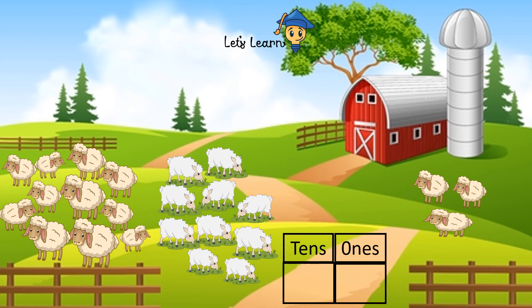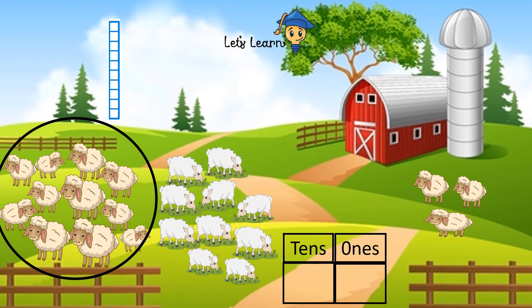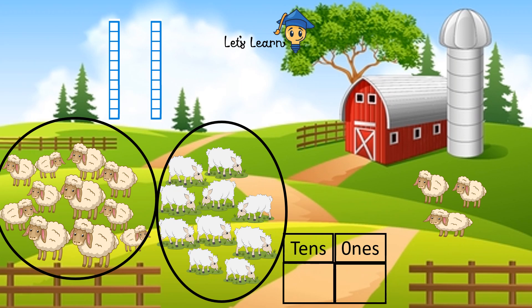Now let me show you how to represent these sheep in the form of blocks. There is one group of 10 sheep — it will be represented by one block of tens. Another group of 10 sheep will be represented by another block of tens. Then the leftover sheep will be represented by tiny little boxes — they are ones, single digit numbers, left alone. Now let's count them. How many small boxes of ones are there? 1, 2, 3. Write 3 in the ones box. Now count the blocks of tens: 1, 2. There are two blocks of tens, so write 2 in the tens box. We can easily tell that there are 23 sheep altogether.